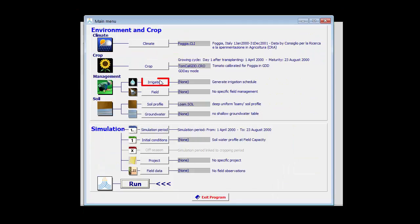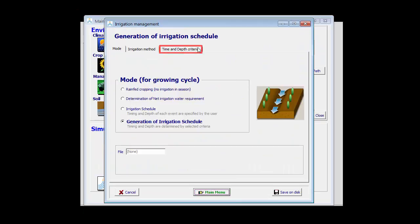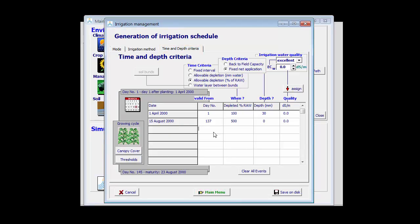I return to my irrigation schedule, and now I have a new rule, which says that starting from the 1st of July, which is day 92, my allowable root zone depletion becomes 130%. When that threshold is reached, I still apply 30 mm of water.